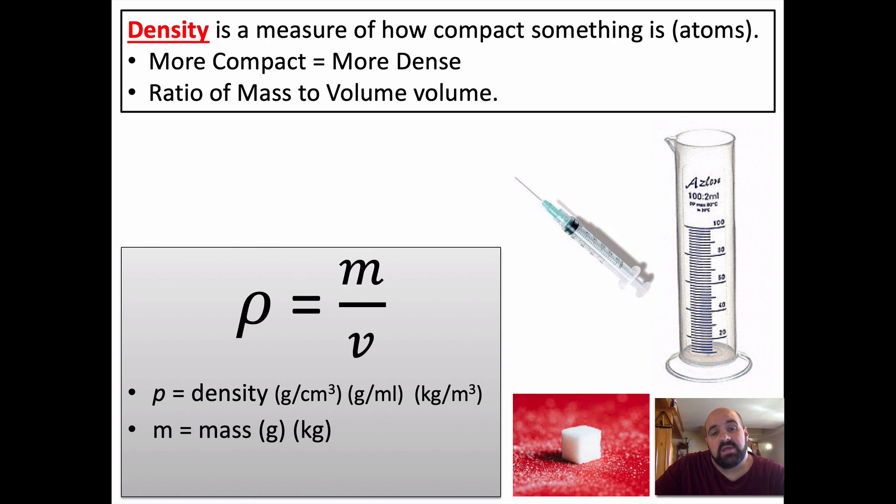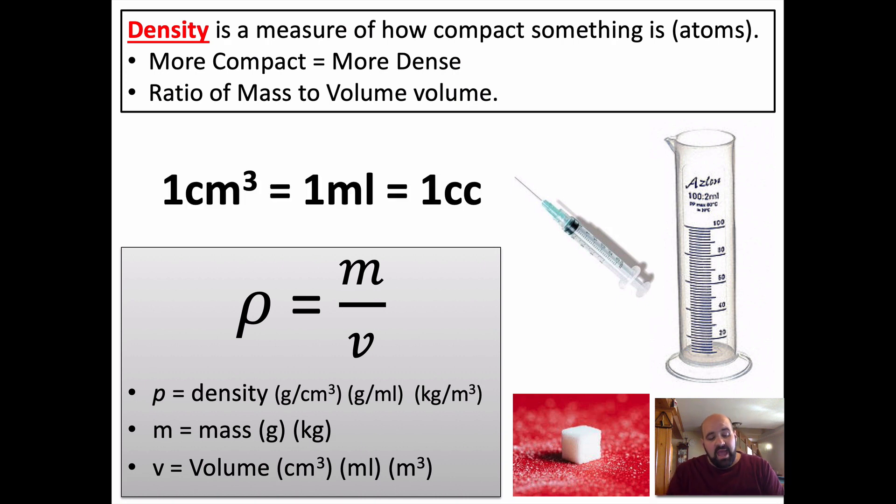We don't use D. Rho equals M over V. Density equals mass divided by volume. And density can be measured in grams per centimeter cubed. Gram is a measure of mass. Centimeter cubed is a measure of volume. You could also use grams per milliliters. Milliliters are also a measure of volume. How much space a liquid is taking up. Or you could use kilograms and meters. So there's different units for that. And we know, of course, mass can be measured in grams or kilograms. And volume, centimeters cubed, milliliters, or meters cubed.